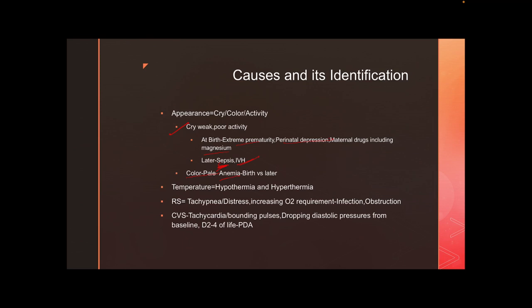If apnea occurs later, consider multiple blood draws and IVH on day two or three. Temperature extremes — too high or too low — can cause apnea. If the baby is tachypneic and in distress with increasing oxygen requirement, think infection or obstruction. Cardiovascularly, if the baby is tachycardic with bounding pulses and FiO2 requirement has risen from 21 percent to 40 to 50 percent within 24 hours with multiple desaturations, think PDA especially on day two to four. Dropping diastolic pressures on a UAC are a good indicator.